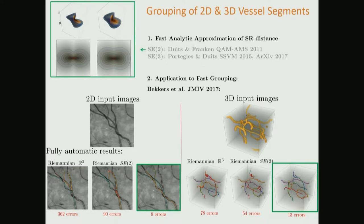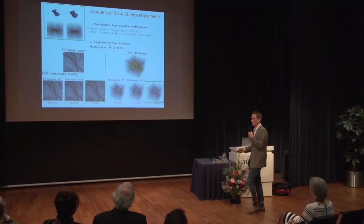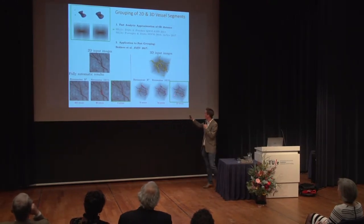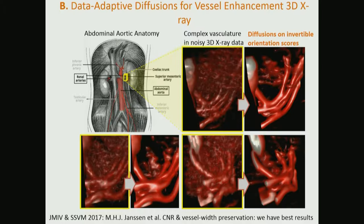To get a full vascular tree structure, you also need perceptual grouping elements. We do that by clustering techniques in the lifted space of positions and orientations, using not Euclidean metrics but rather sub-Riemannian metrics, for which we found very concise analytic formulas. These approximations are good enough in practice and allow you to automatically connect the right vessel segments in 2D and 3D. For the crossing-preserving diffusions in 3D orientation scores, these really nicely clean up noisy X-ray datasets, keeping track of contrast-to-noise ratios and vessel width preservation, giving the best results compared to many other methods.